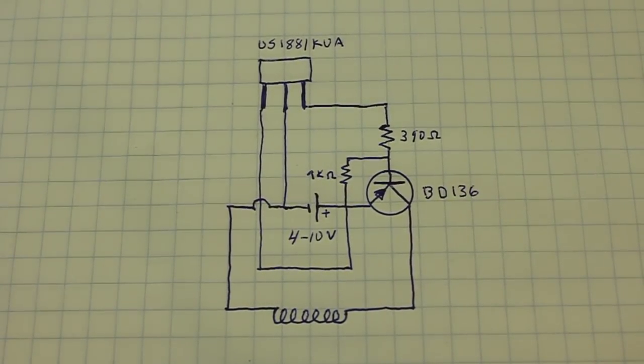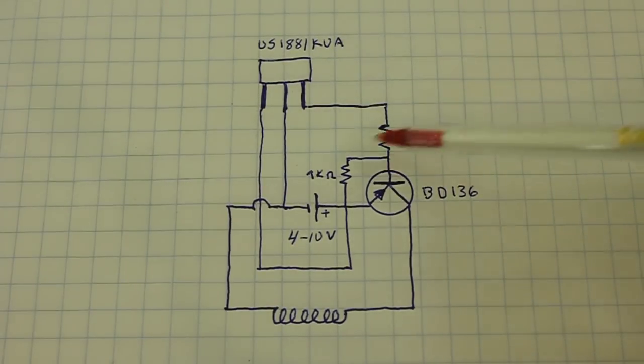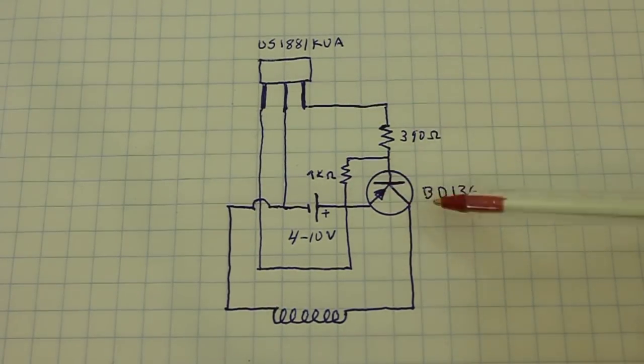This is the schematic. We need a Hall Effect sensor, a couple of resistors, PNP transistor, and this is the coil of the motor, plus the power supply, we need DC.